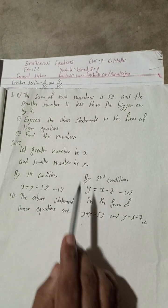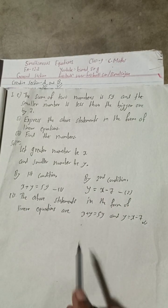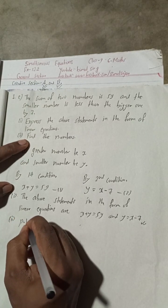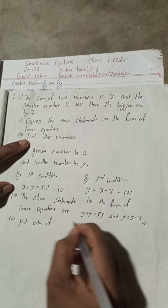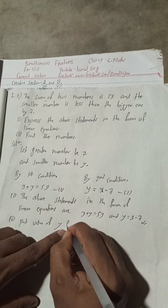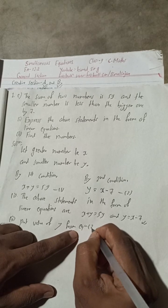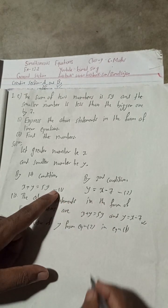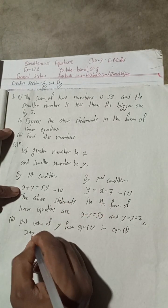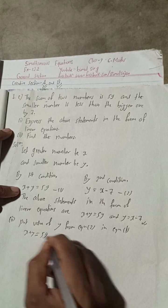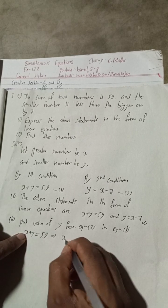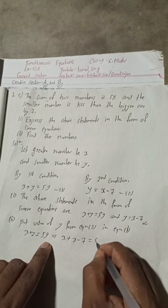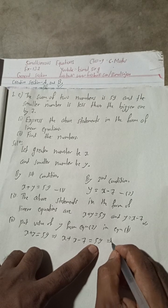Now, number two: find the numbers. Put the value of y from equation 2 into equation 1. So x plus y equals 59 becomes x plus (x minus 7) equals 59.